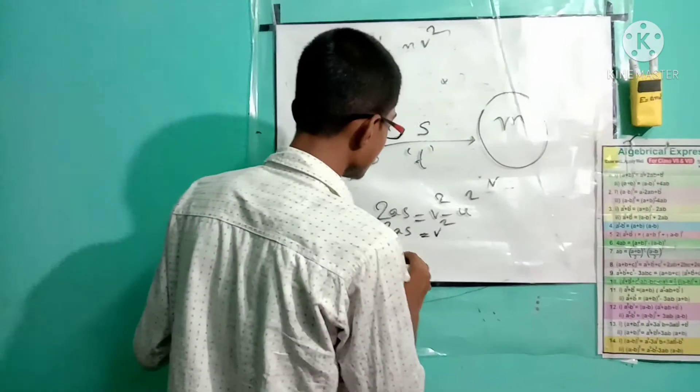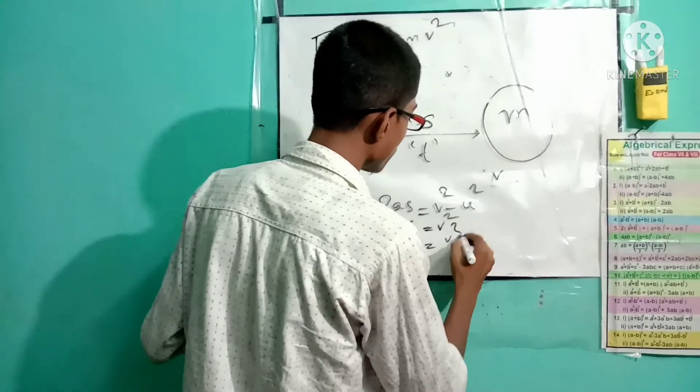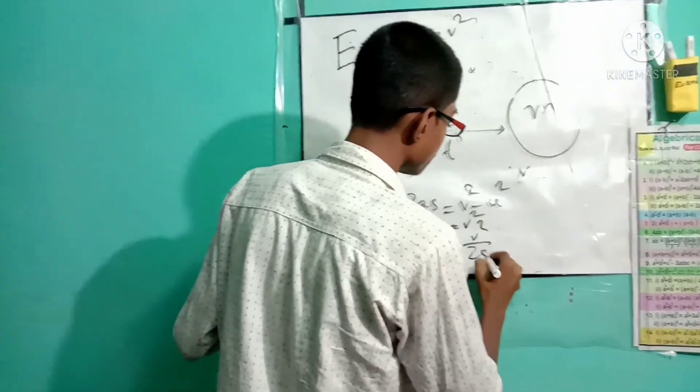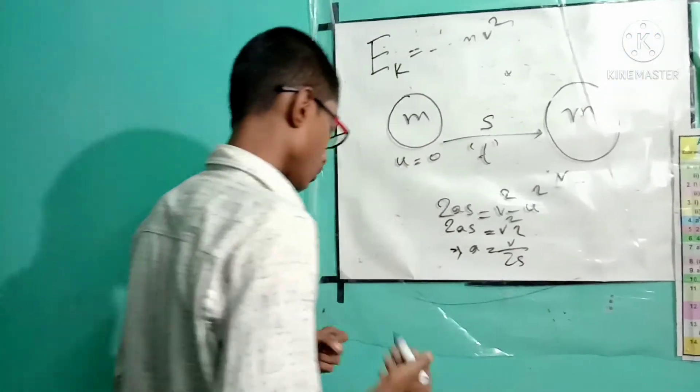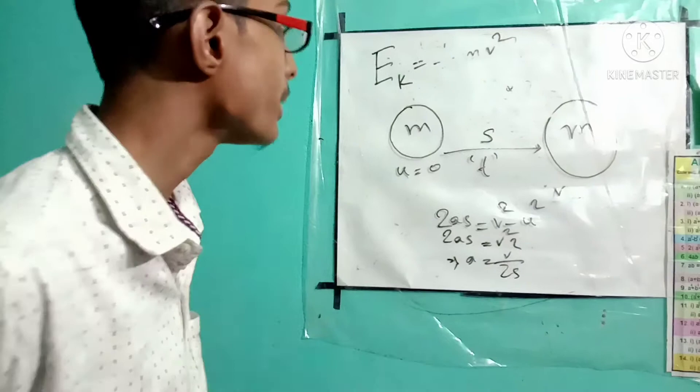From this equation I can say that a is equal to v² divided by 2s.